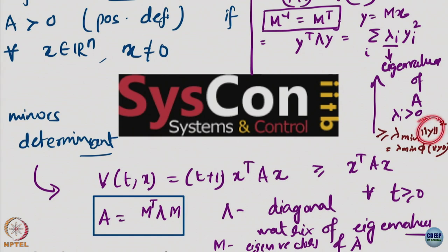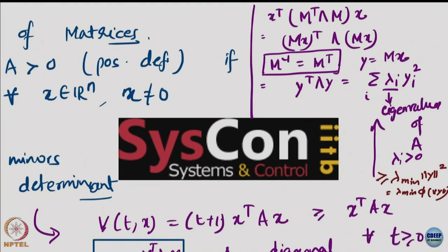Similarly, norm of y squared is a class K function — in fact it is a class KR function. Therefore this is a positive scaling multiplied by a class KR function. A positive scaling does not affect the class K nature. So we have shown that x transpose Ax dominates a class K function — in fact it dominates a class KR function.